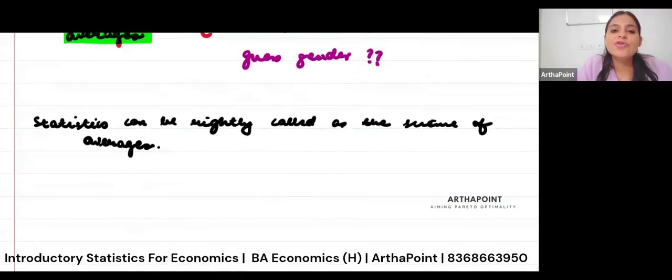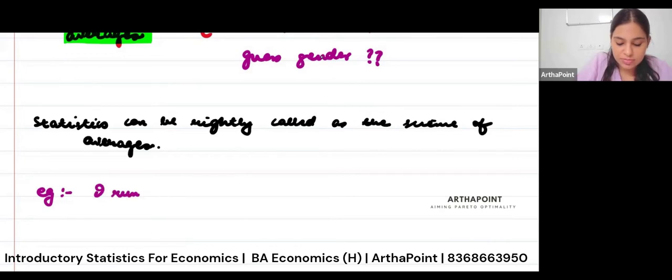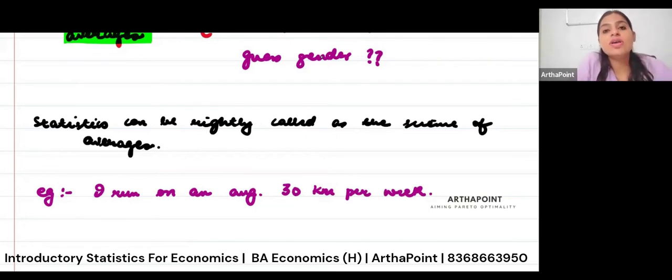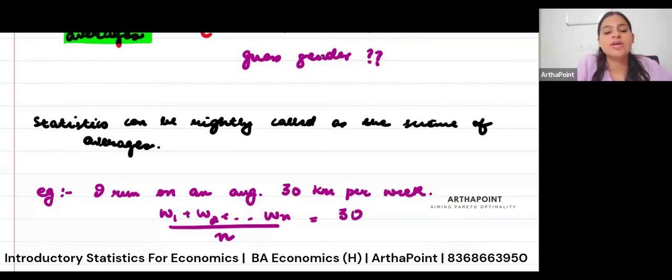Let us write down a few examples of how the averages are usually written in statistics. For example, if I go ahead and write, I run on an average 30 kilometer per week, then I am talking about the average kilometers I cover. Sometimes I may end up running 24. Sometimes I may end up running 36. But the average that I am talking about, that is 30. So week one plus week two till week n, if I divide this by n, on an average, I run 30 kilometer per week.